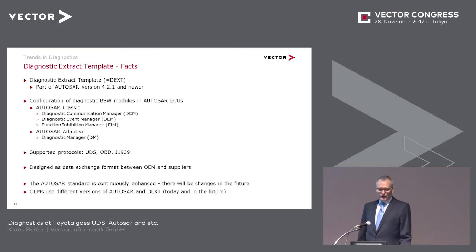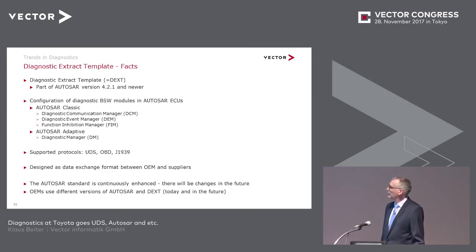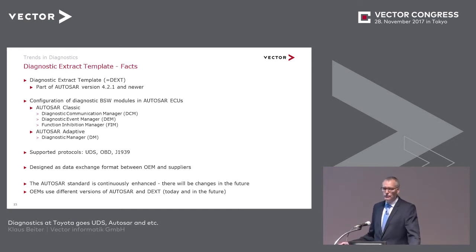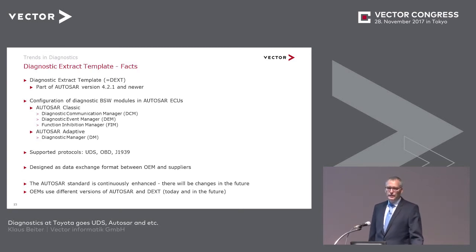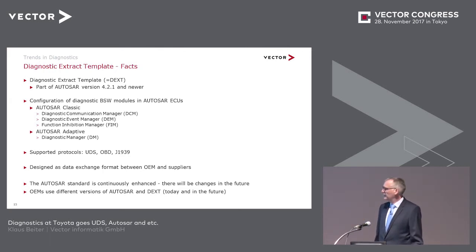Therefore, AUTOSAR released a diagnostic extract template, which we call DEXT, first in version 4.2.1. This is a file format with focus on basic software configuration for AUTOSAR Classic as well as the new AUTOSAR adaptive platform. According to AUTOSAR compliance, it supports UDS, OBD and J1939 diagnostic protocols. It is designed as a data exchange format between OEM and suppliers. Today we see that the AUTOSAR standardization is in an evolution process and the DEXT format will be released with each version — there will be future changes.